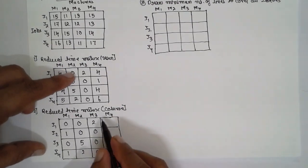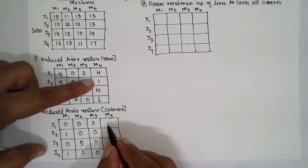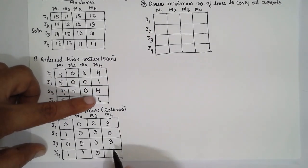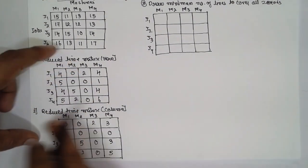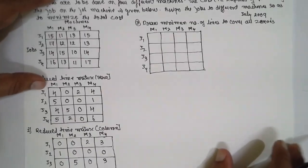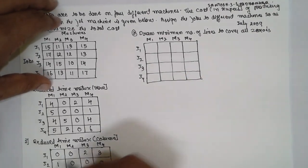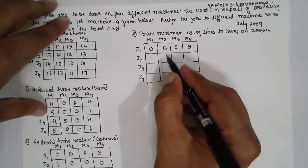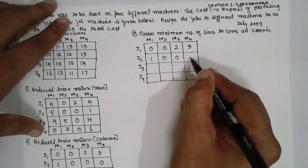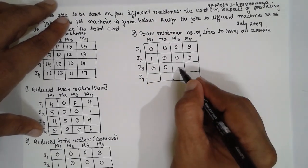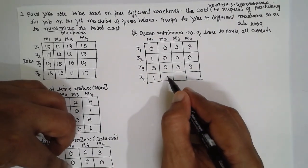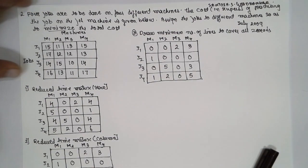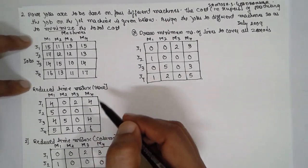Continuing column-wise reduction: in column 4, the smallest is 1: 4−1=3, 1−1=0, 4−1=3, 6−1=5. After completing the column-wise reduction, the resulting reduced matrix is: Row 1: 0, 0, 2, 3; Row 2: 1, 0, 0, 0; Row 3: 0, 5, 0, 3; Row 4: 1, 2, 0, 5.